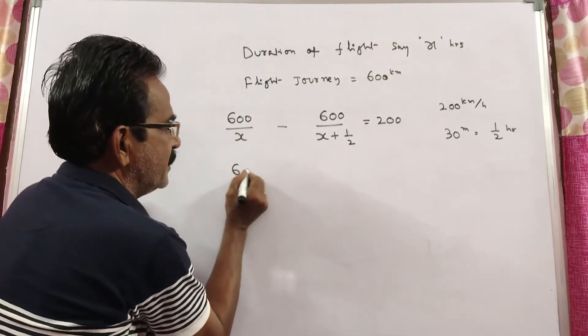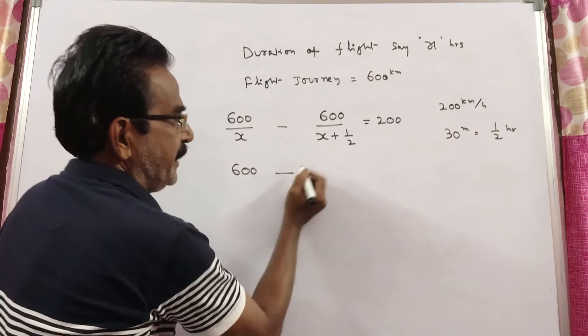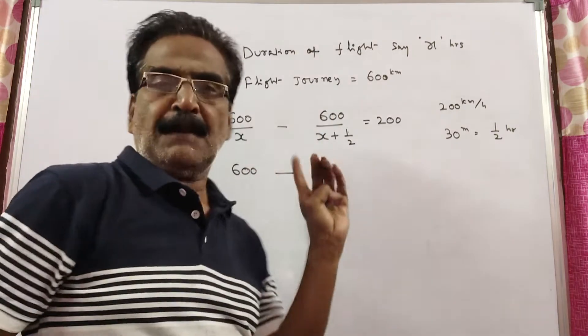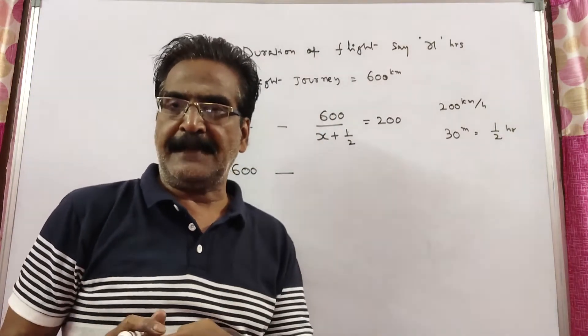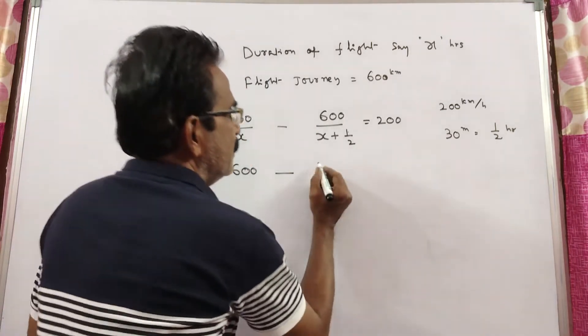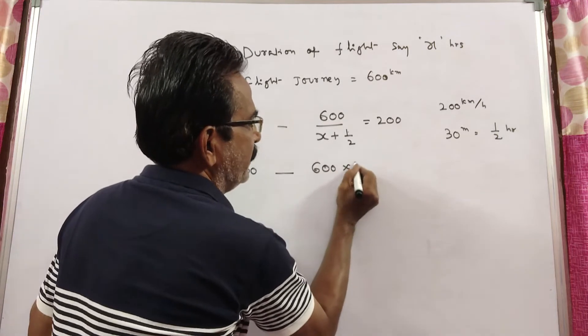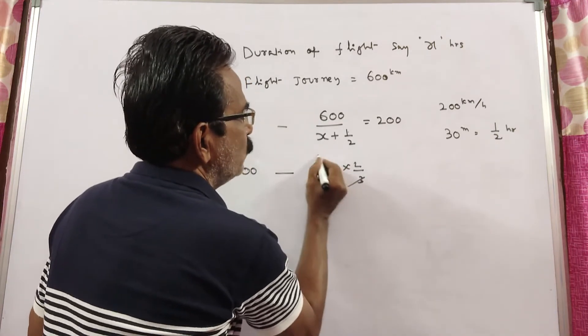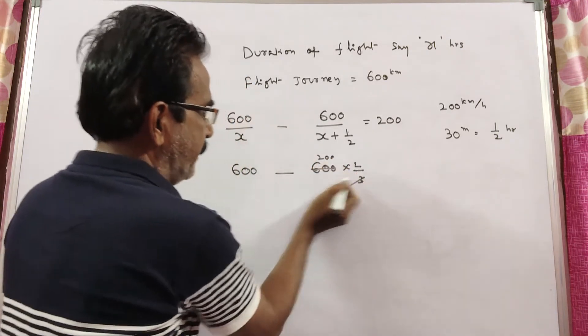600 divided by 1 is 600 kmph, minus 600 divided by 1 plus 1/2. 1 plus 1/2 is 3/2, so 600 divided by 3/2. That means 600 times 2/3, which is 400 kmph.